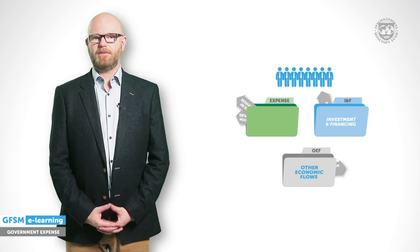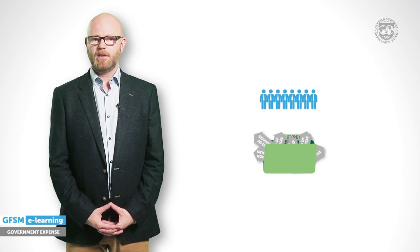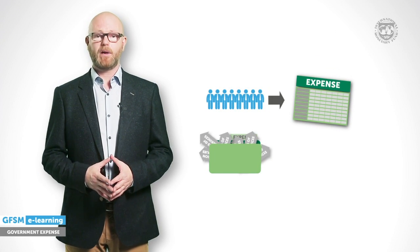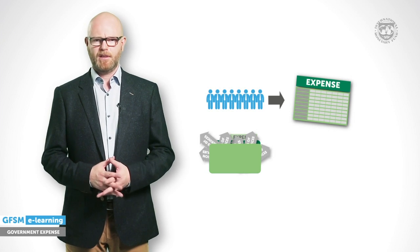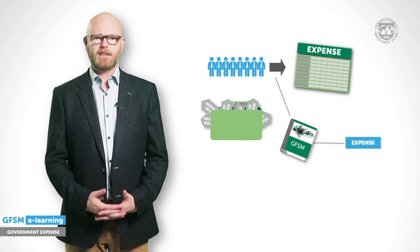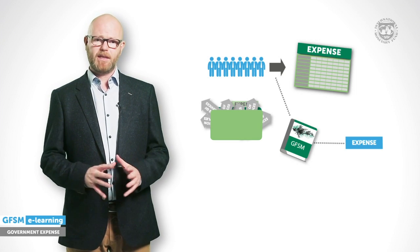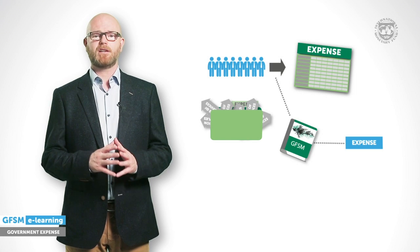Determining the recording of various types of transactions has important implications. Distinguishing between expense and financing affects key analytical measures such as the government deficit or surplus and by definition net worth. Once the staff has finished sifting through all of the budgets and has determined which outflows are considered expense, they can start compiling the expense table by economic types of transaction. GFSM provides a detailed classification scheme that allows for meaningful analysis of various expense components and supports international comparisons.